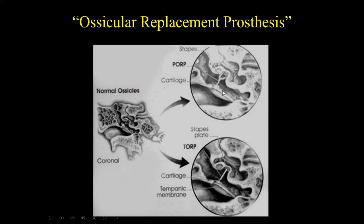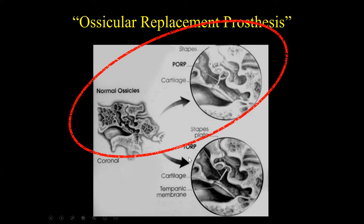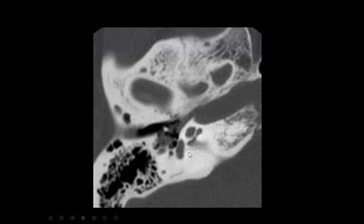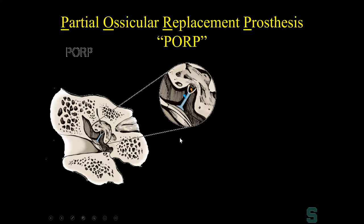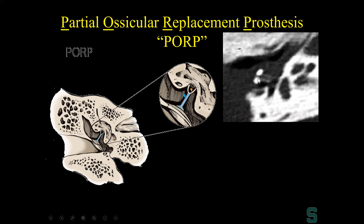A PORP is a partial ossicular replacement, used when the stapes is maintained. What the surgeons try to do is create a bridge from the tympanic membrane to the stapes. For example, if a cholesteatoma has eroded the incus but the stapes is intact, they recreate the chain with a prosthesis from the tympanic membrane that attaches to the head of the stapes. A total ossicular prosthesis (TORP) is used when there is no stapes — the chain must extend from the tympanic membrane all the way to the oval window.